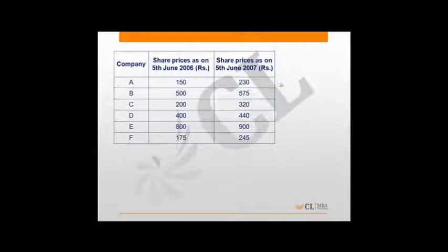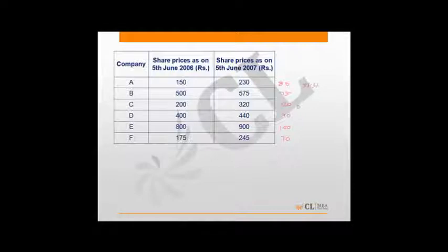Looking at companies A, B, C, D, E, and F: the absolute price change in A is 80, in B is 75, in C is 120, in D is 40, in E is 100, and in F is 70. For percentage changes: 80/150 = 53.3%, 75/500 = 15%, 120/200 = 60%, 40/400 = 10%, 100/800 = 12.5%, and 70/175 = 40%. One should always remember these reciprocals and fractions.